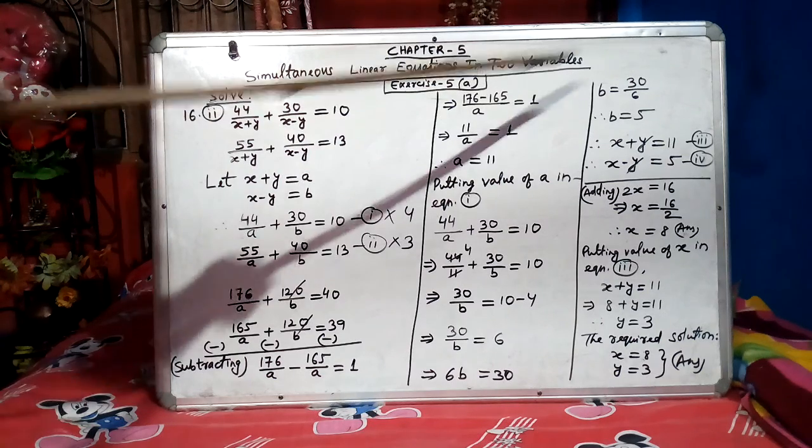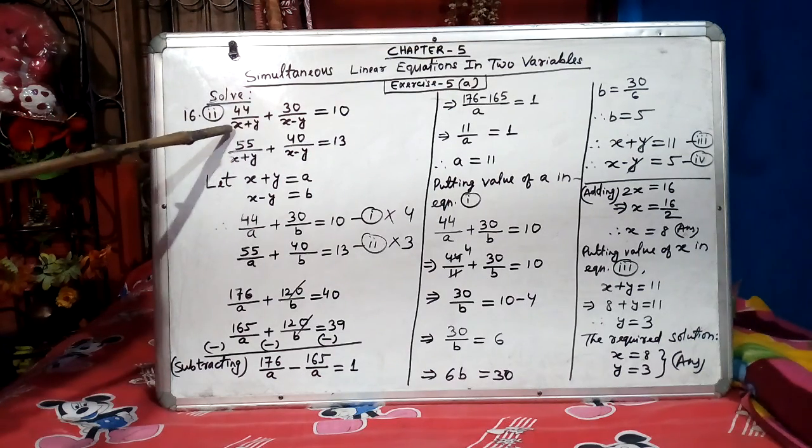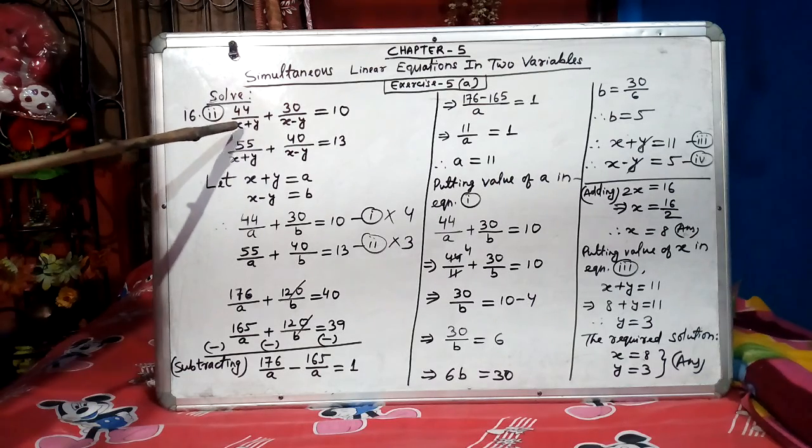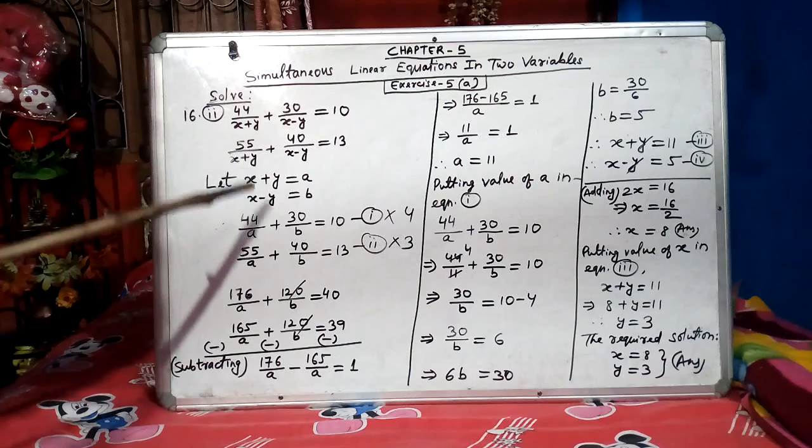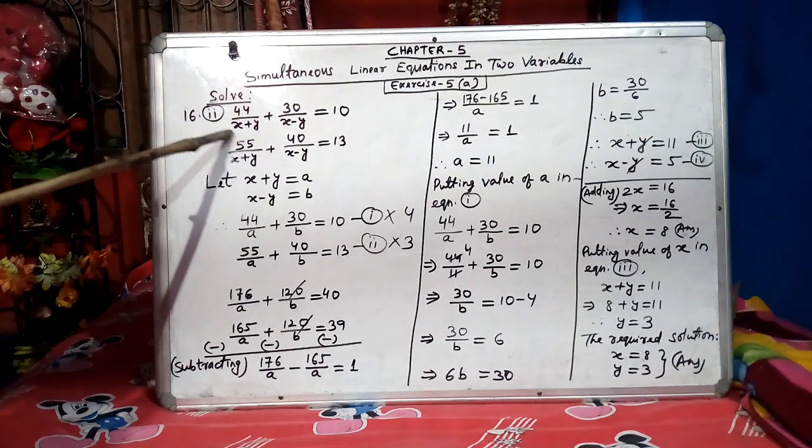As it is two variables and it is solve, we will find the value of x and y, these two unknown variables. As you can see, the first equation has 44 by x plus y. Normally, the first position is only for x, but here we can see there is x as well as y, and 30 by x minus y.